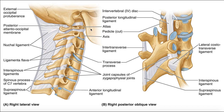Mainly on this slide, we're going to be focusing on the picture on the left. This is actually the lateral view of the right side of the cervical spine. So let's first start by identifying some of the bones here.